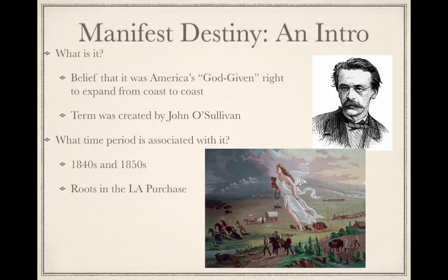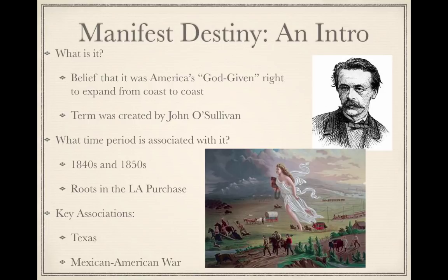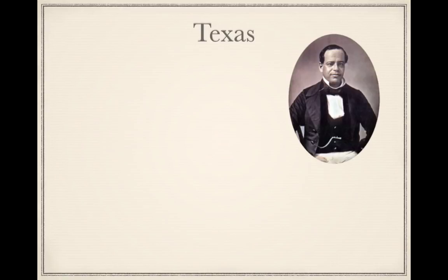As the United States purchased that huge chunk of land that doubled the size of the country, the question became: what do we do with that land? Americans want to move west. Key things to associate with manifest destiny include the development of Texas as a state and eventually the Mexican-American War, which added more territory to the continental United States. Jumping over to Texas, Santa Ana was the leader of Mexico — something like a dozen different times.